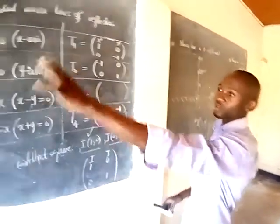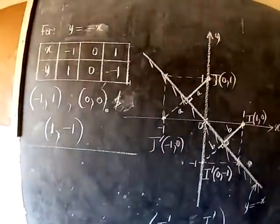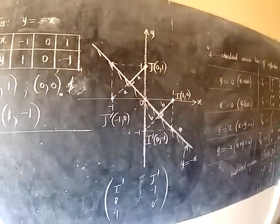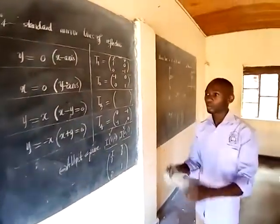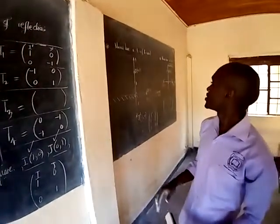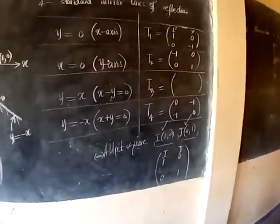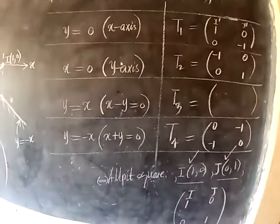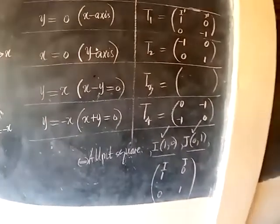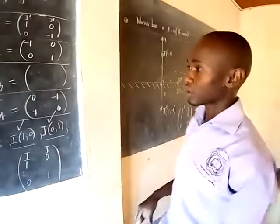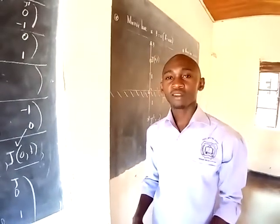Dear candidates, that process is what you are expected to do whenever you are asked to use that line in a transformation. Once you have a matrix, the other process remains constant: matrix of transformation times the object matrix gives you the image matrix. I leave you to practice and go through the others concurrently. I will do another tutorial to guide you regarding graphs of transformations. Thanks for watching.